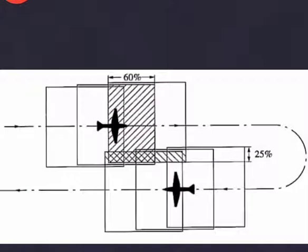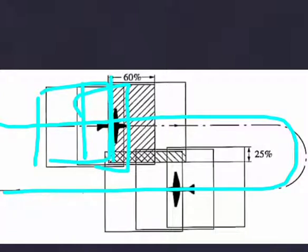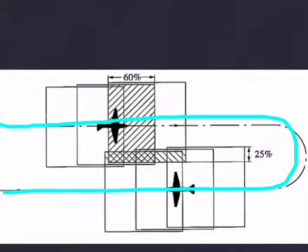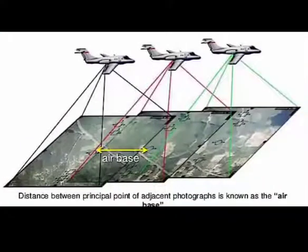The flight pattern shows an aeroplane taking a turn and going back, capturing frames during this process — frame one, frame two, frame three in one pass, then three more frames on the return pass, with overlaps between frames. There is typically 60 to 70 percent overlap between photos and 20 to 40 percent overlap between flight lines. The airbase is the distance between the principal points of adjacent photographs.